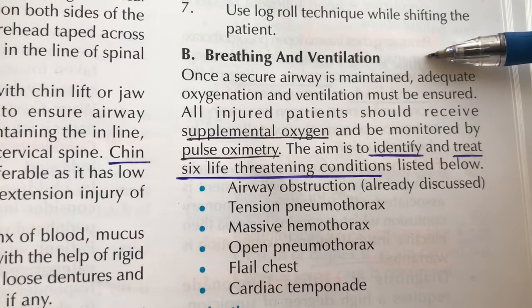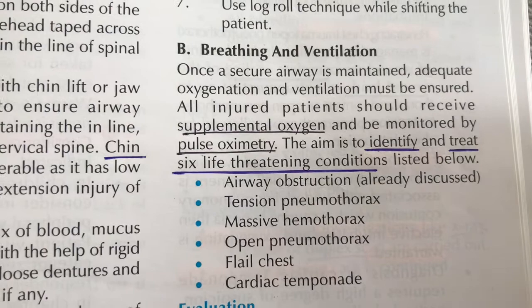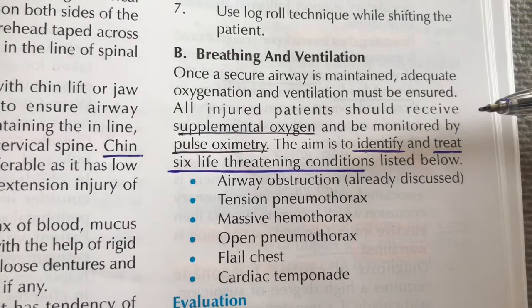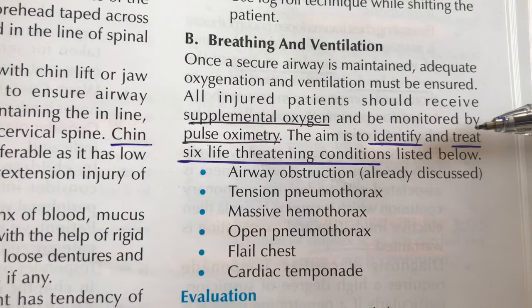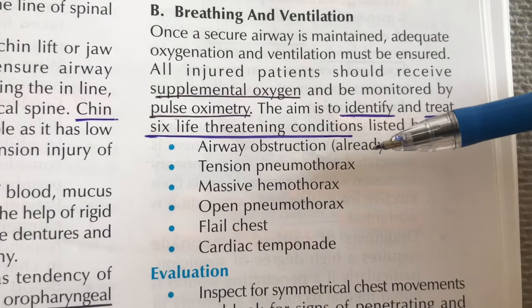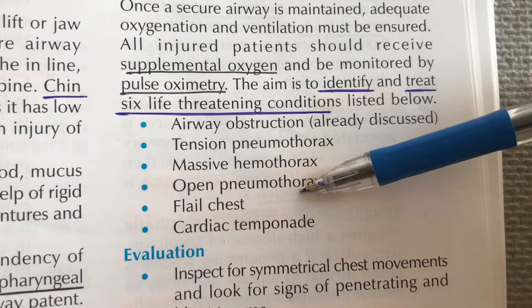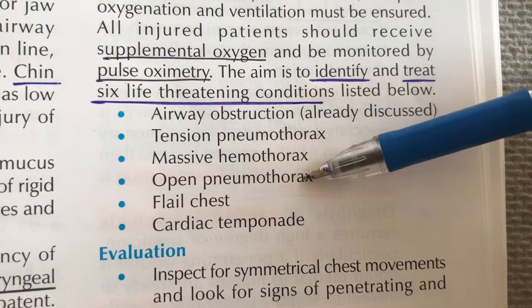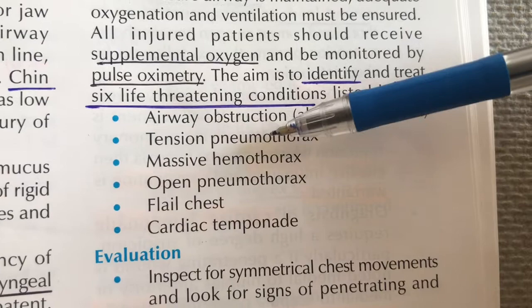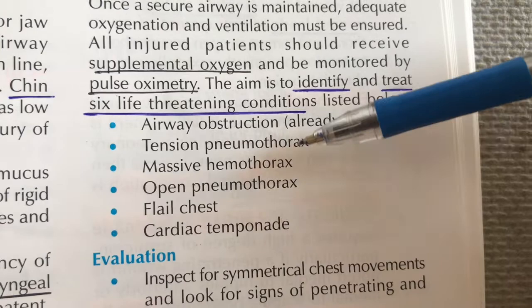Moving to Part B — Breathing and Ventilation. Once the airway is secured, adequate oxygenation and ventilation must be ensured. All injured patients should receive supplemental oxygen and be monitored by pulse oximetry. The aim is to identify and treat six life-threatening conditions: airway obstruction, tension pneumothorax, massive hemothorax, open pneumothorax, flail chest, and cardiac tamponade.